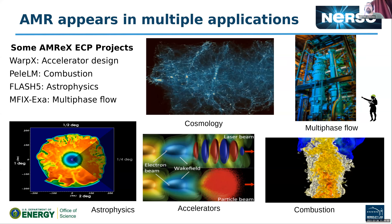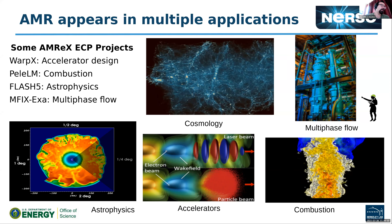Many projects funded through the Exascale Computing Project are built on AMReX, including WarpX, a particle-in-cell electromagnetics code for accelerator design; PeleLM, a low Mach number combustion code; Flash-X, an astrophysics code for radiation hydrodynamics; mFix-Exa for multi-phase flow simulating chemistry in a chemical looping reactor; and cosmology codes. All of these are different ECP projects now based on AMReX.